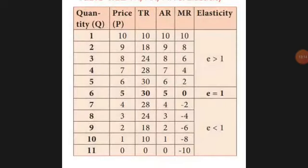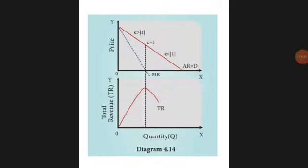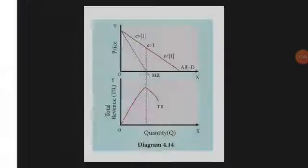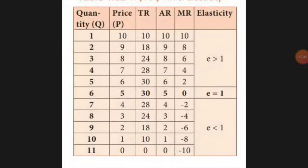At the point where quantity equals 6, MR equals zero — this is the maximum peak level of TR. The TR curve reaches its maximum and stops rising. MR equals zero at this point, and the MR curve touches the x-axis. From unit 6 to unit 10 in the table, the curve becomes negative — TR is decreasing and MR is negative.